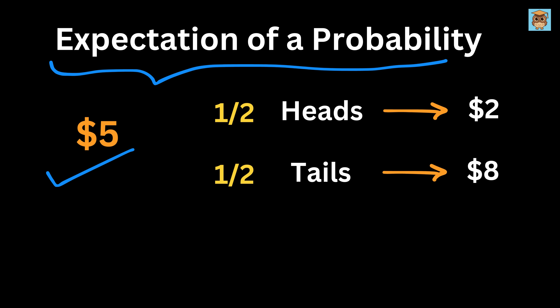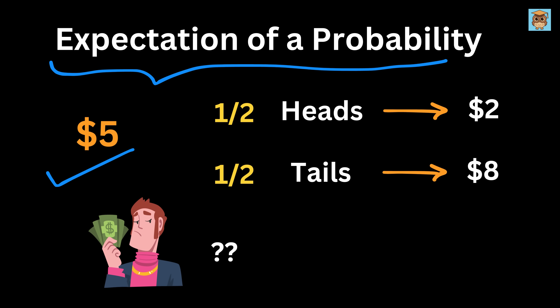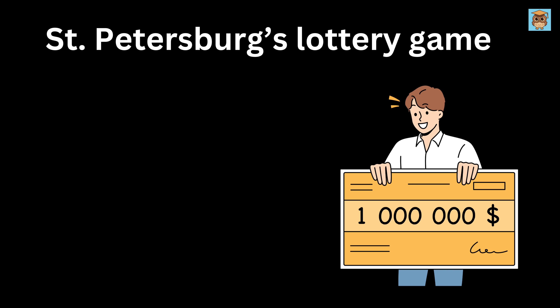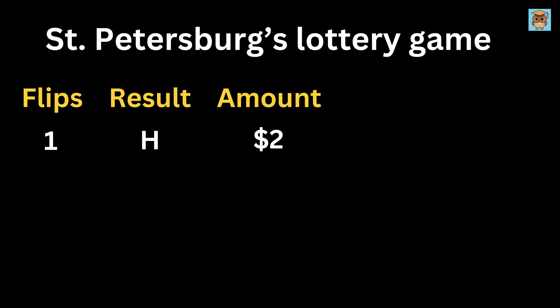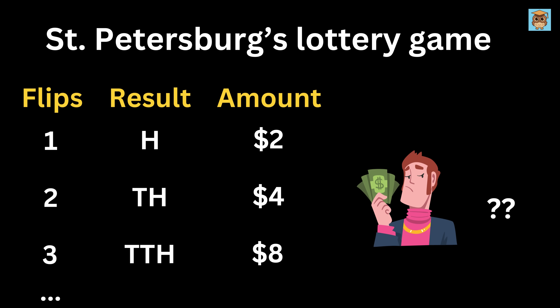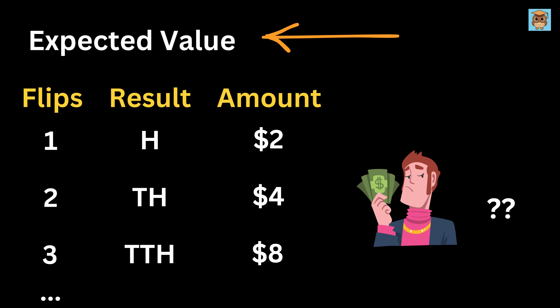So, if I ask you how much would you be willing to pay in order to play this game, your answer must be less than $5. Keeping this in mind, next up we have a game called St. Petersburg's Lottery Game, where we keep on flipping a coin until it lands on heads. You win $2 if heads show up on the first flip, $4 if it comes on the second, $8 if on the third, and so on. The question is, how much should you be willing to pay in order to play this game? So let us find the expected value of this game.